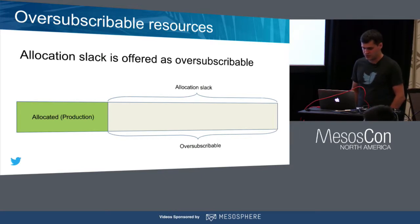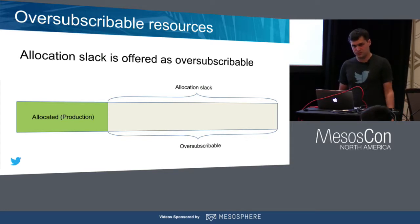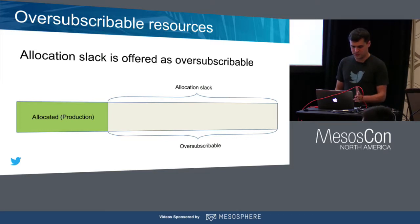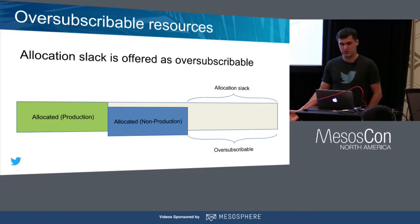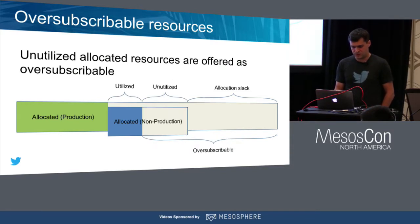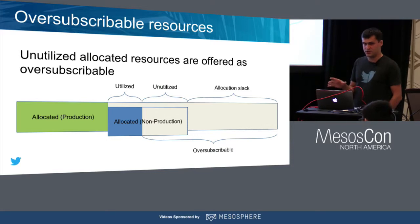Let's see how we detect available resources. First of all, we always ignore resources allocated to production jobs — they are not available for oversubscription. If there are no non-production jobs running, then all oversubscribable resources equal the allocation slack, meaning not-allocated resources. When we launch a non-production job, allocation slack is reduced and we make those resources available as oversubscribable. If we detect that the job is idle, we can offer unutilized resources as oversubscribable, increasing that amount of resources.